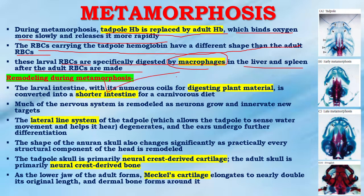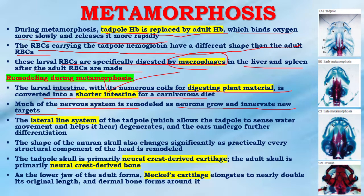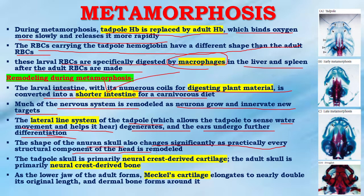Remodeling during metamorphosis: the larval intestine, with its numerous coils for digesting plant material, is converted into a shorter intestine suited for a carnivorous diet. Much of the nervous system is remodeled as neurons grow and innervate new targets. The lateral line system of the tadpole, which allows it to sense water movement and hear, degenerates and the ear undergoes further differentiation.